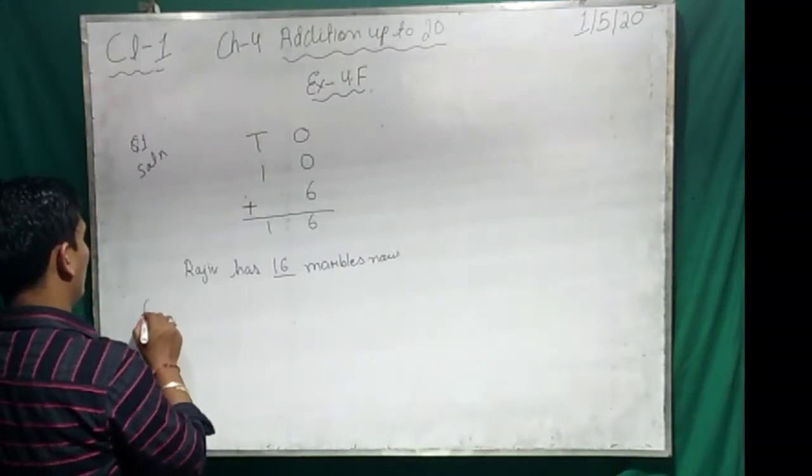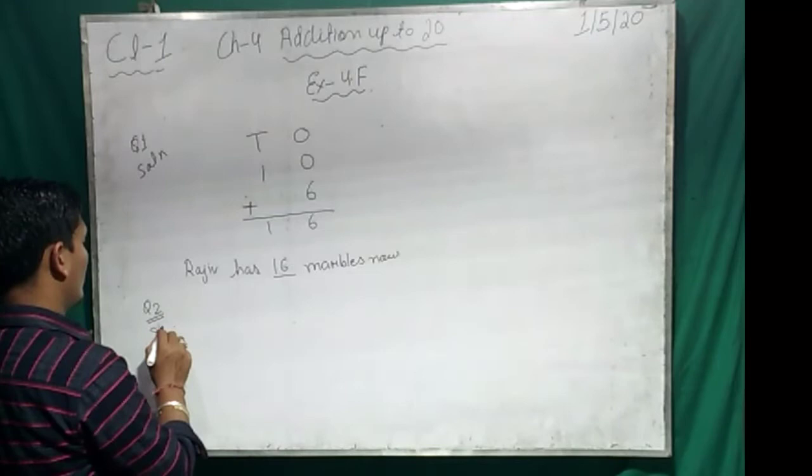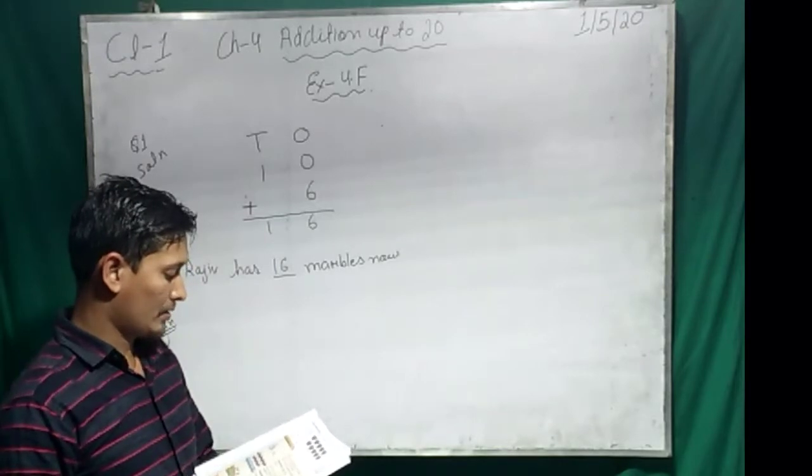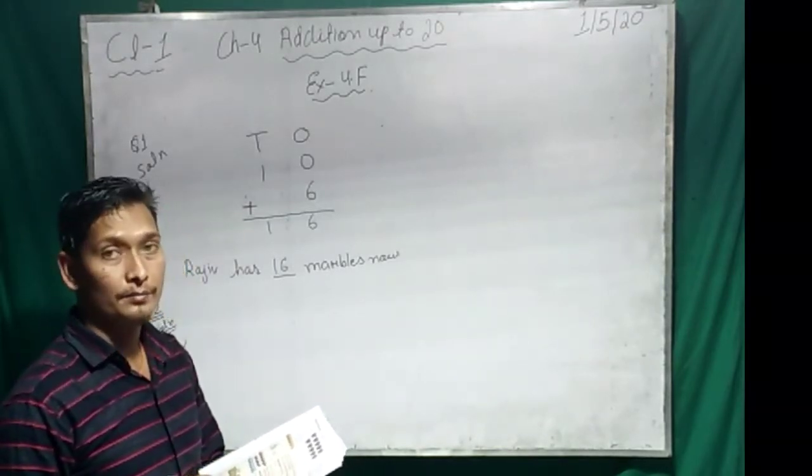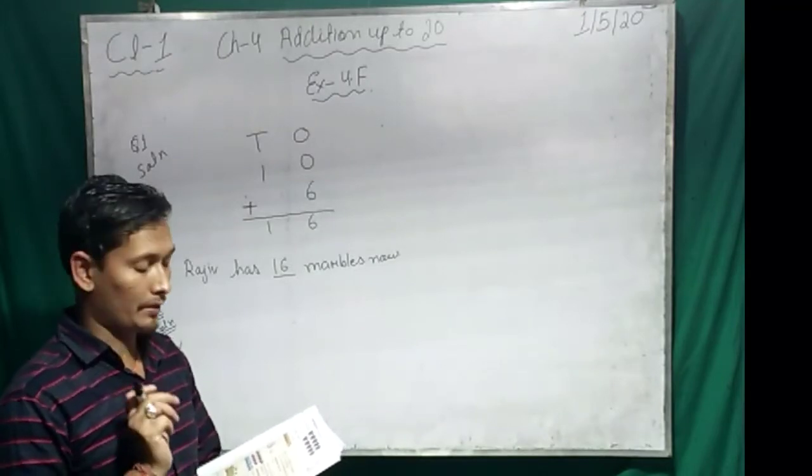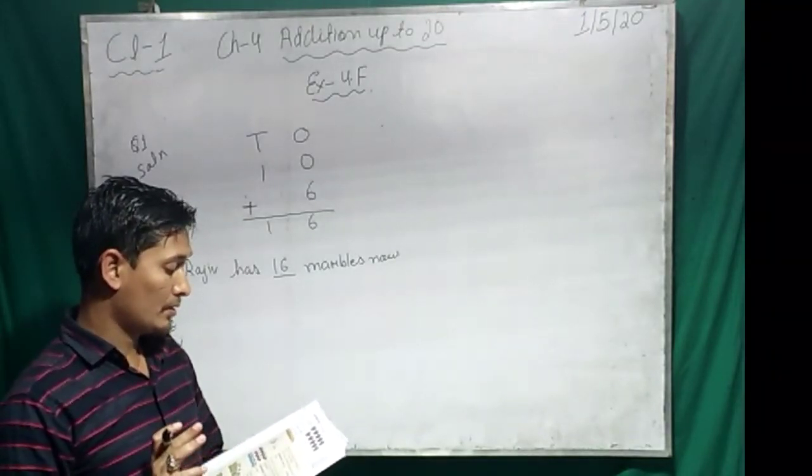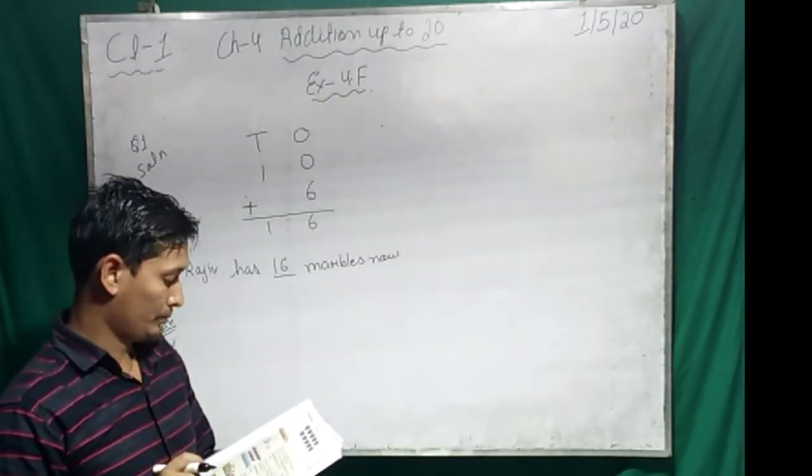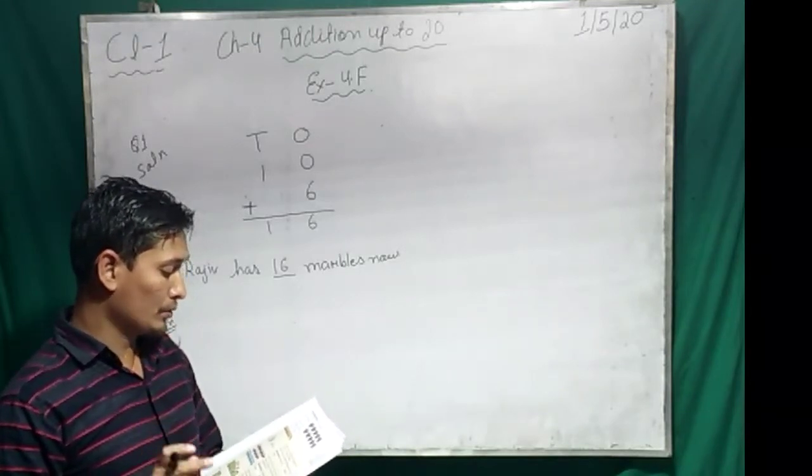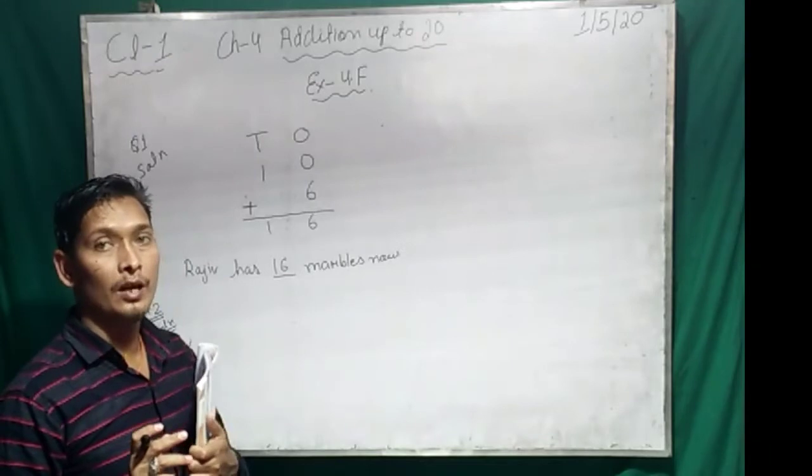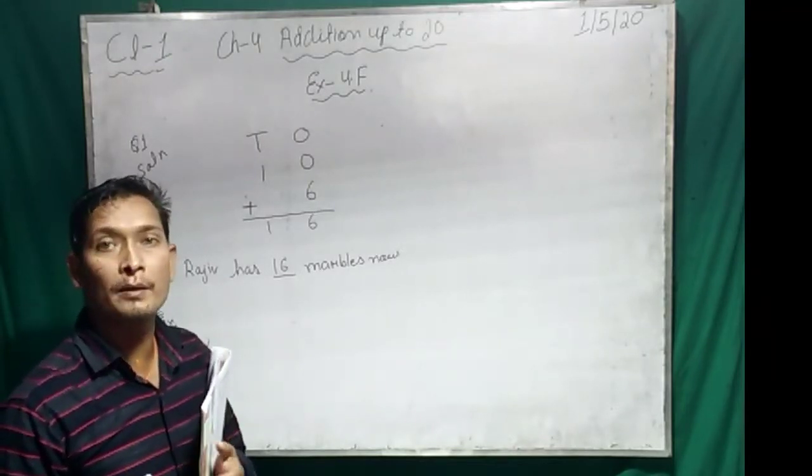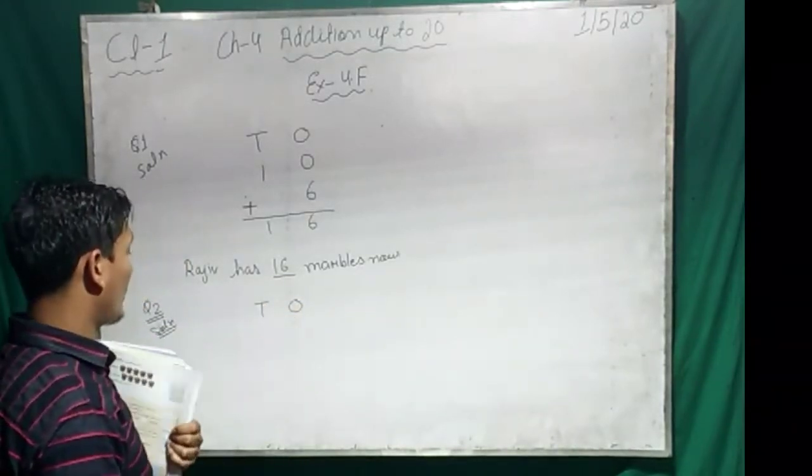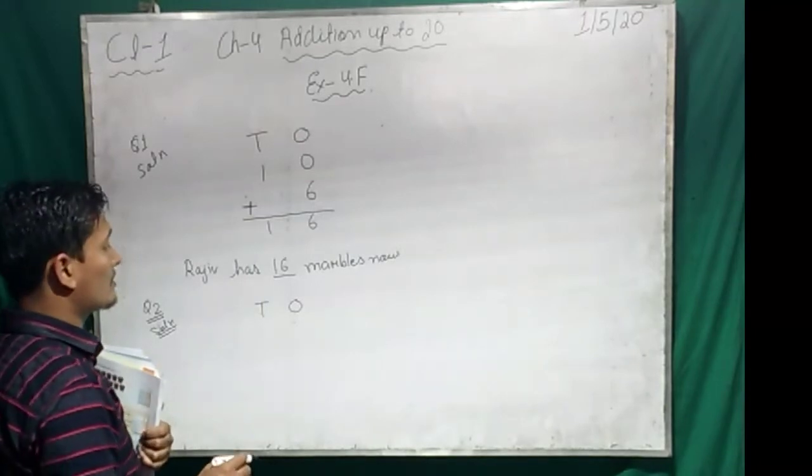Now let's see question number two. What is question number two? Anil has seven toy cars. Anil has how many toy cars? Seven. So Anil has four toy buses. How many toy buses? Four. How many toys do the two boys have together? How many toys do the two boys have together? Together means plus.